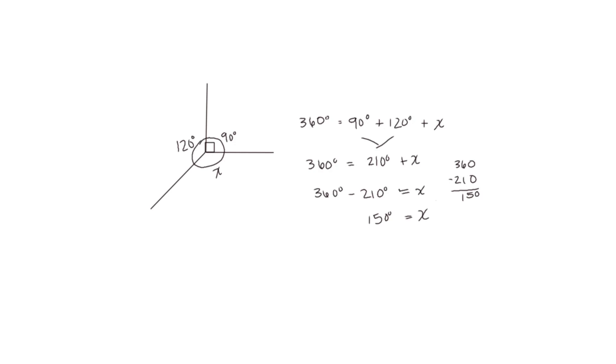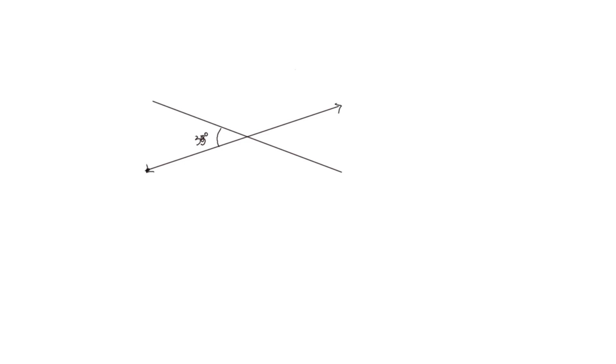Let's look at a different example. Here we're going to draw two intersecting lines. Intersecting means they cross each other, but they're not perpendicular because they do not cross at right angles. If we measure the first angle with a protractor and find it to be 33 degrees, we know that the line is a straight line, so the sum of these two angles has to be 180 degrees. And measuring the second angle, we see that it's 147 degrees, so these two angles together are 180 degrees.